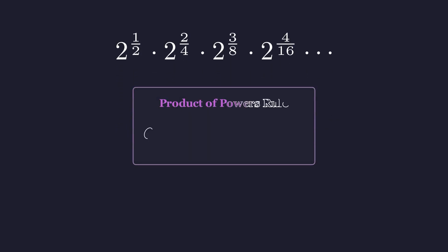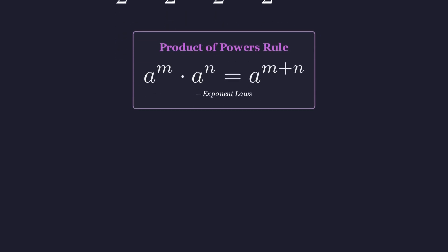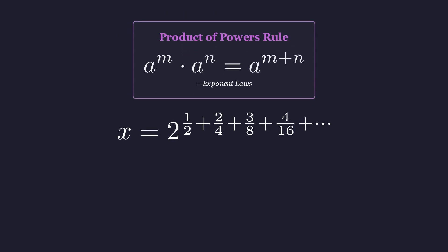When you multiply powers with the same base, you add the exponents. So x equals 2 raised to this infinite sum in the exponent. The whole problem comes down to finding what this series adds up to.